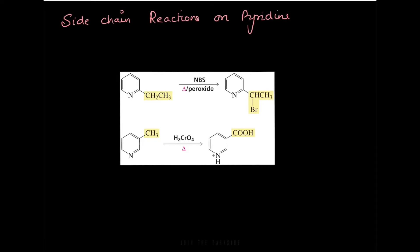Pyridine can also undergo certain reactions on its side chain. Here is a substituted pyridine with an alkyl group, and the hydrogen on that alkyl group is the allylic hydrogen. When it is reacted with NBS, which is N-bromosuccinimide, specifically for allylic bromination, the hydrogen is going to be replaced by bromine. Almost all the reactions that happen with substituted benzenes can also happen with pyridine.